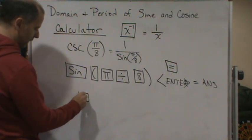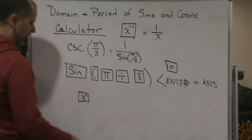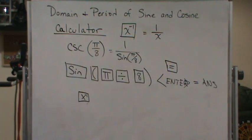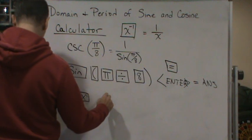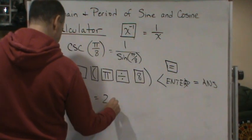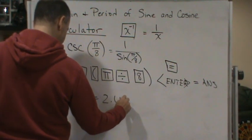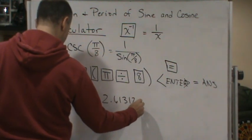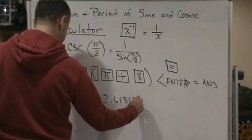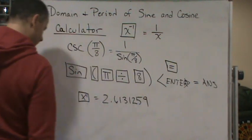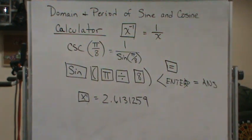That should give you 1 over your answer. And your display would give you 2.6131259. And that's it.